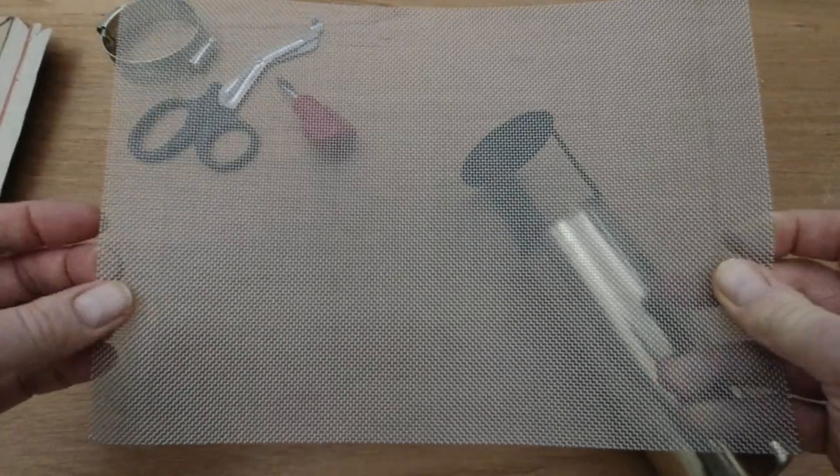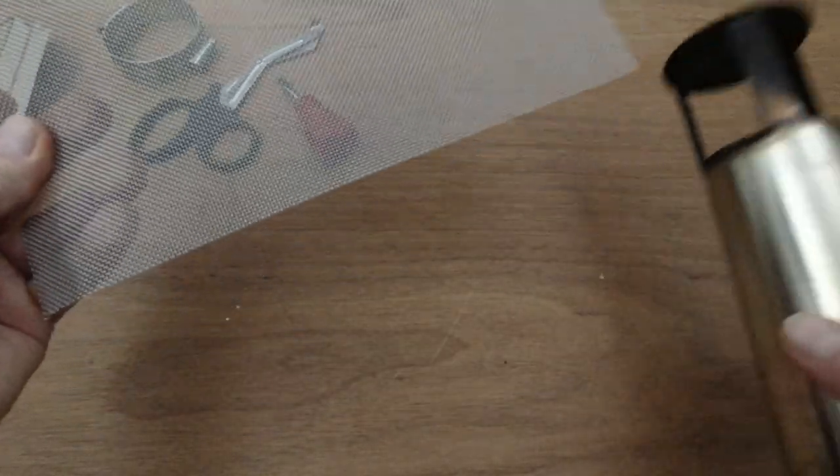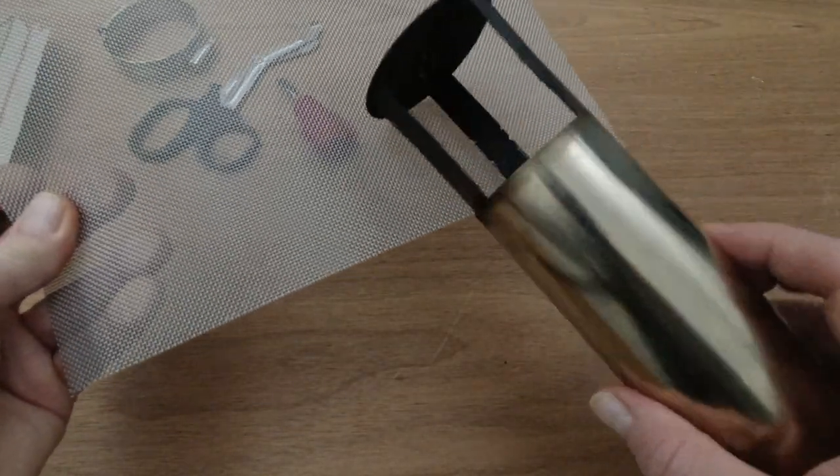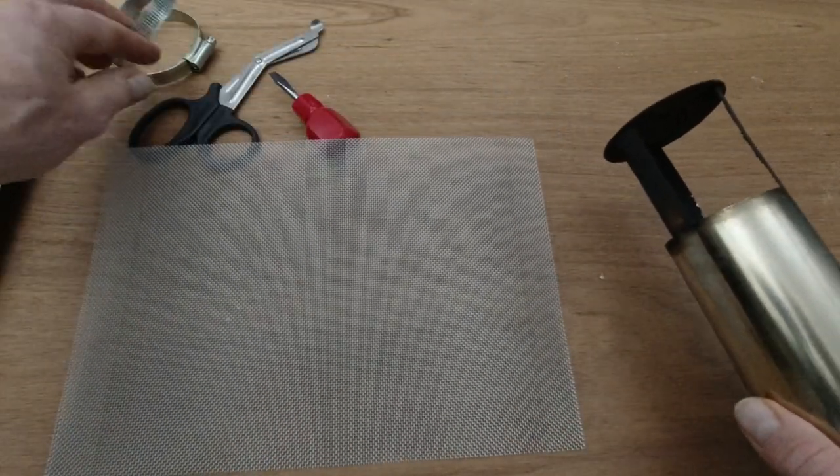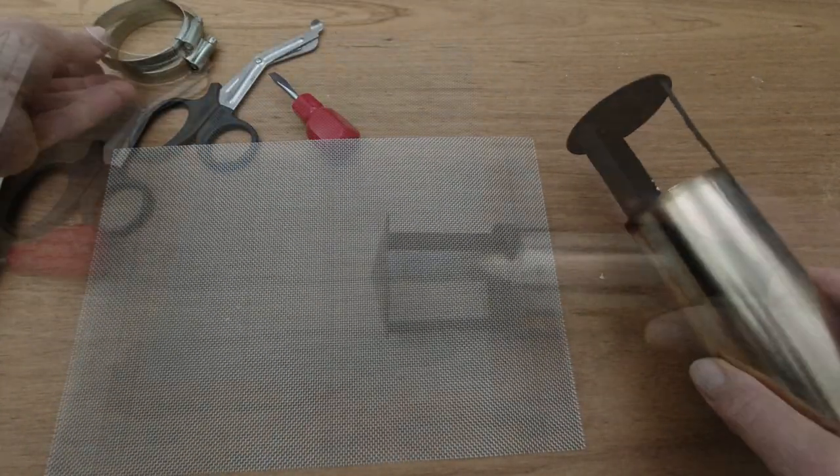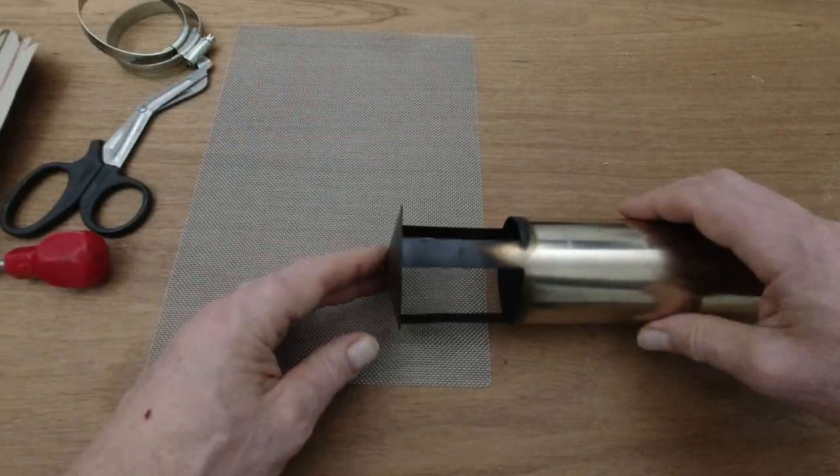The idea is to create a strip to go around the top of the flue and then hold that in place with a couple of hose rings.